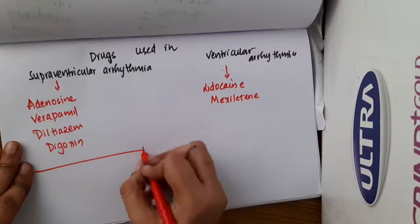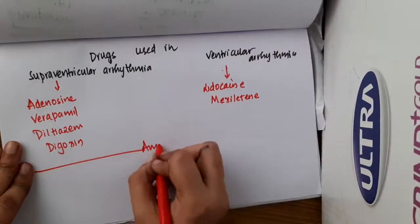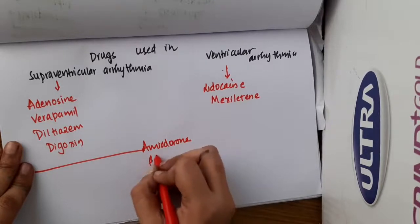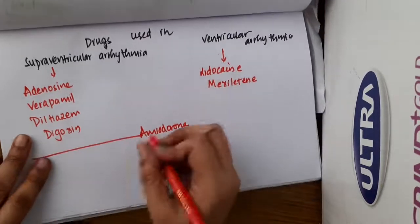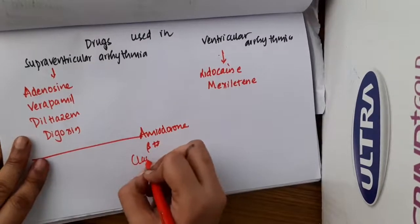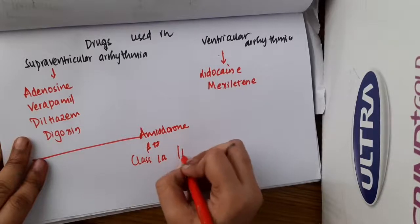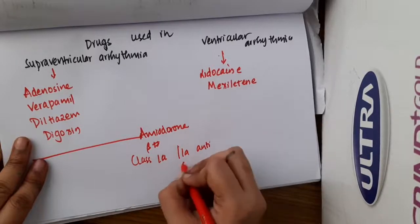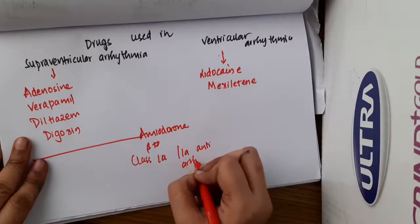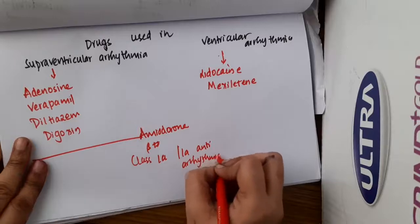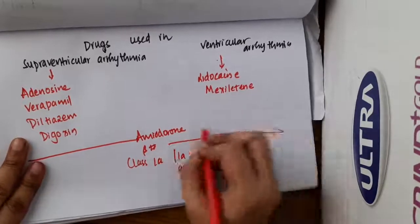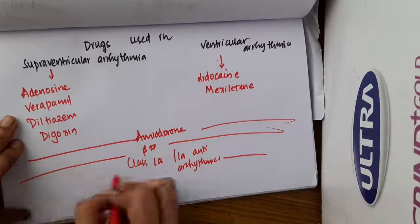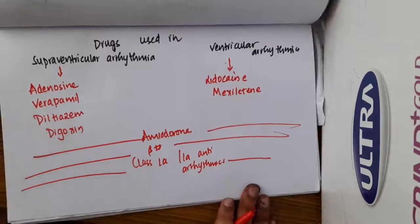The drugs like amiodarone, beta blockers, and class 1A or 1C antiarrhythmics can be used in both supraventricular arrhythmias and also ventricular arrhythmias.